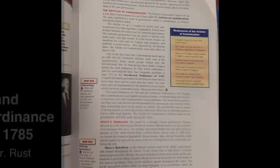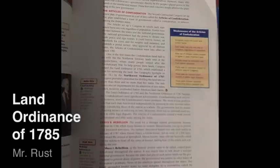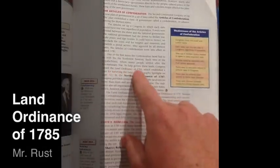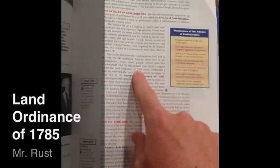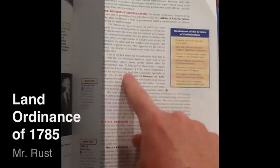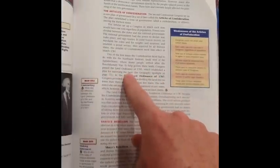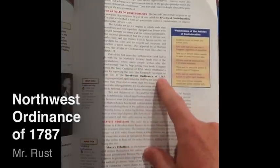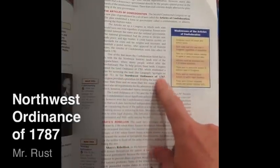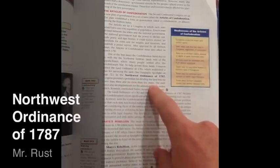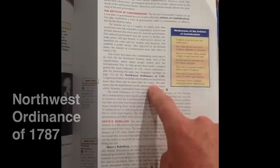Ohio was divided up in two ways. The Land Ordinance of 1785 established a plan for surveying the land, and the Northwest Ordinance of 1787 provided a procedure for dividing land into states.